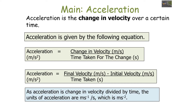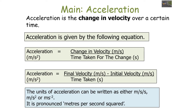As acceleration is a change in velocity divided by time, the units of acceleration are meters per second divided by seconds, which is meters per second squared. It can be written as either m/s/s, m/s² or ms⁻². Any of those notations is fine and we pronounce this unit as meters per second squared.